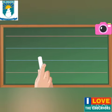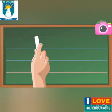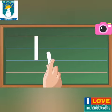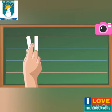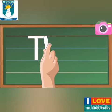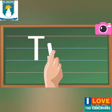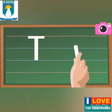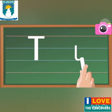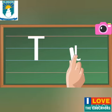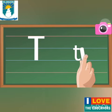Start from the top and draw a standing line down. Go back to the top and draw a sleeping line across. Small t: start above the middle and draw a standing line with a small curl at the bottom, then go to the middle and add a sleeping line across.